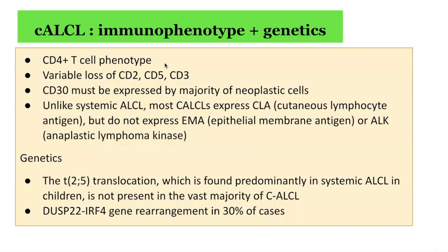The immunophenotype of cutaneous anaplastic large cell lymphoma is characterized by CD4 positive T-cell phenotype with variable loss of CD2, CD5, and CD3. CD30 must be expressed by the majority of neoplastic cells. Unlike systemic ALCL, most cutaneous ALCL express CLA (cutaneous lymphocyte antigen) but do not express EMA (epithelial membrane antigen) or ALK (anaplastic lymphoma kinase). Genetically, the t(2;5) translocation found predominantly in systemic ALCL in children is not present in the vast majority of cutaneous cases. A gene rearrangement named DUSP22-IRF4 is found in 30% of cases.